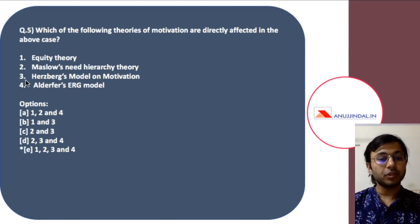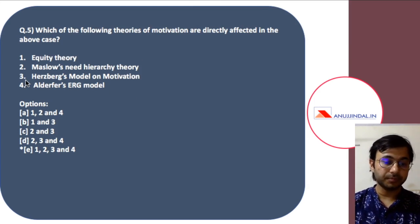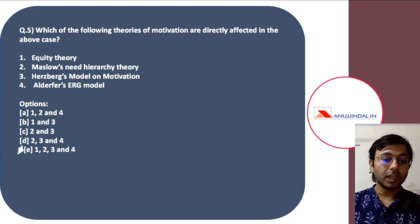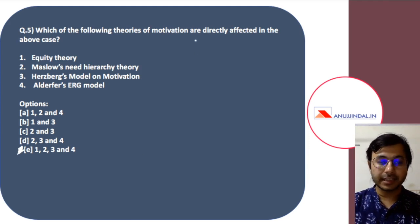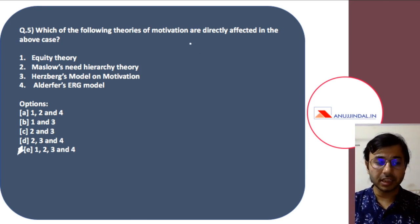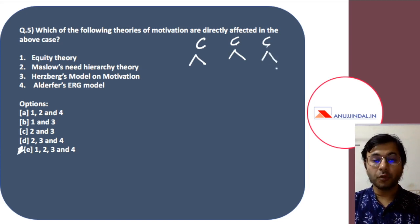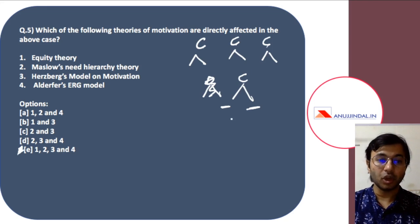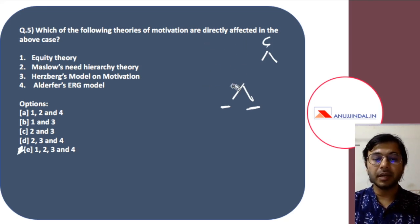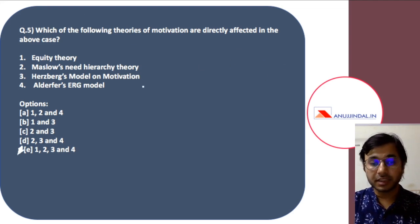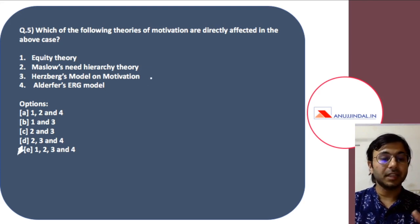The last question: which theories of motivation are directly affected in this case? The options are equity theory, Maslow's need hierarchy theory, Herzberg's model, and Alderfer's ERG theory. Equity theory is about comparison of your job with another job inside or outside the organization, comparison with another person inside or outside the organization, or comparison of your performance with required performance. These comparisons can create dissatisfaction and anxiety if no equity is found.